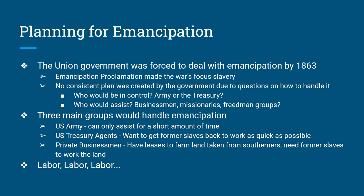It comes down to three different groups. The army can only assist for a short amount of time — basically here's a blanket, here's a tent, here's a meal, wait here until something else happens. After that you have the US Treasury agents — they've got money, they're handing out money, and they basically want to get these workers back to work as quickly as possible for money purposes. Then you have private businessmen who are just going to try to make as much money as they can from the land and put former slaves to work.